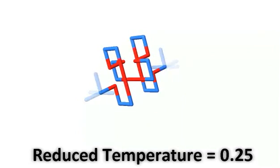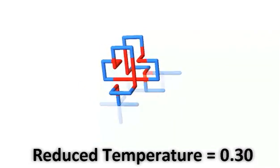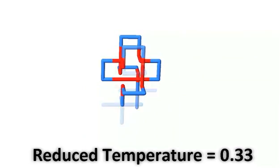When temperature is low, the protein spends most of the time sampling the lowest energy configurations.